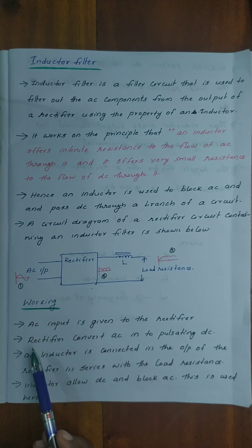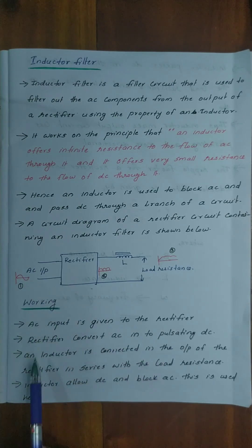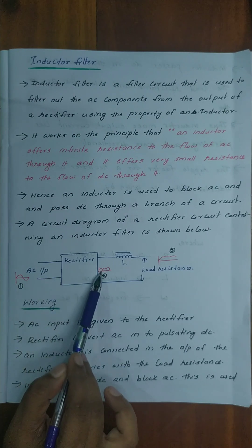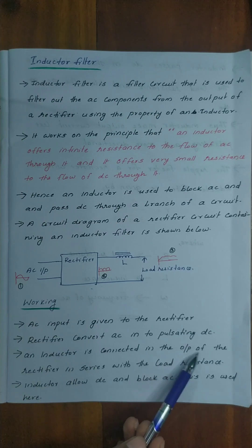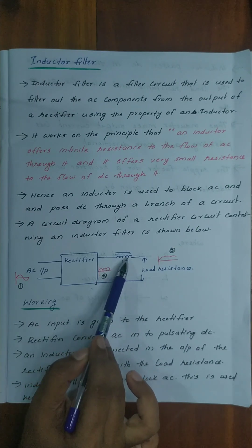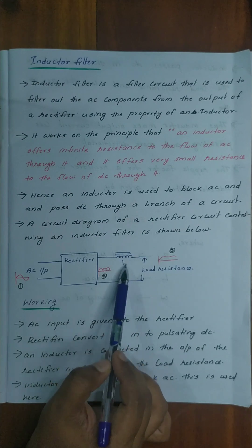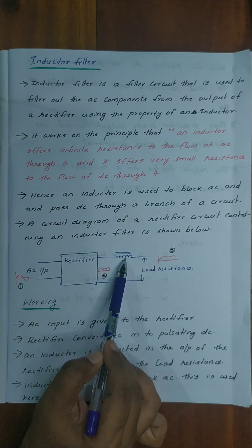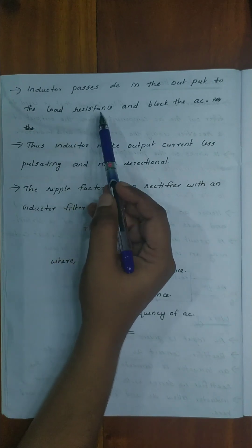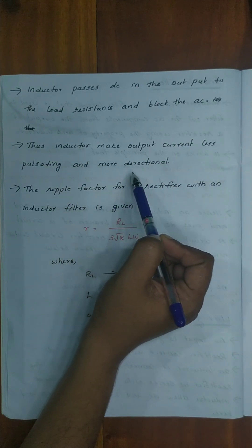Working step by step: AC input is given to the rectifier. The rectifier converts AC into pulsating DC. An inductor is connected in the output of the rectifier in series with the load resistance. The inductor allows DC to pass and blocks AC. Thus, the inductor passes DC to the load resistance and blocks AC, making the output current less pulsating and more directional.